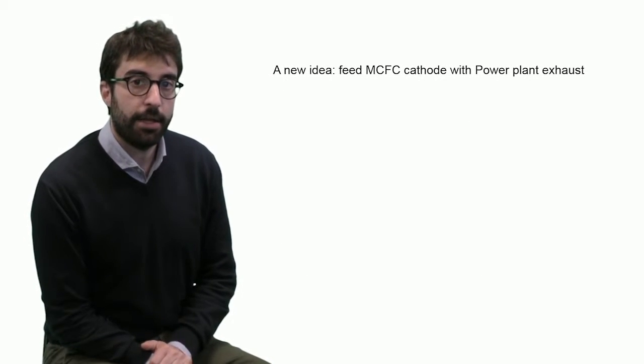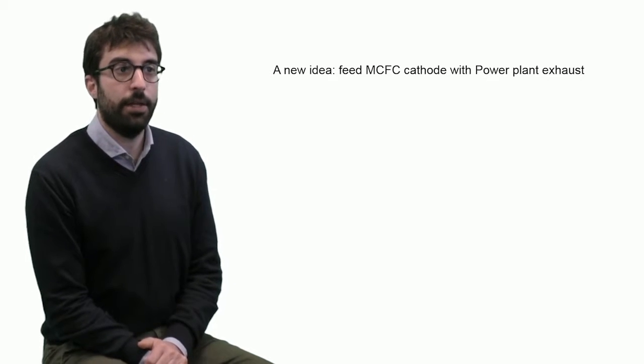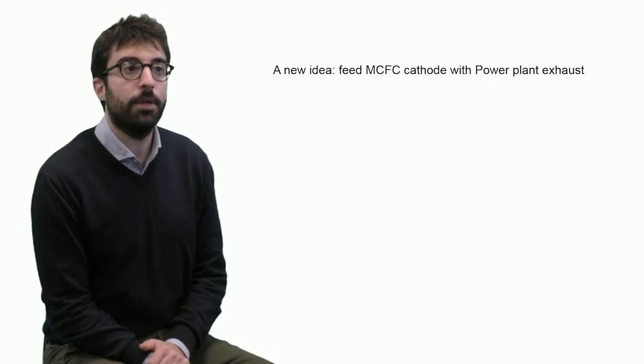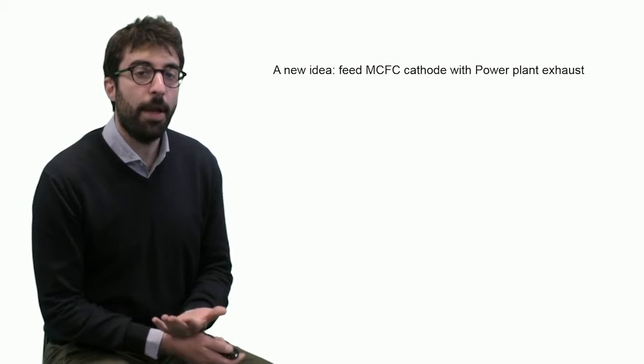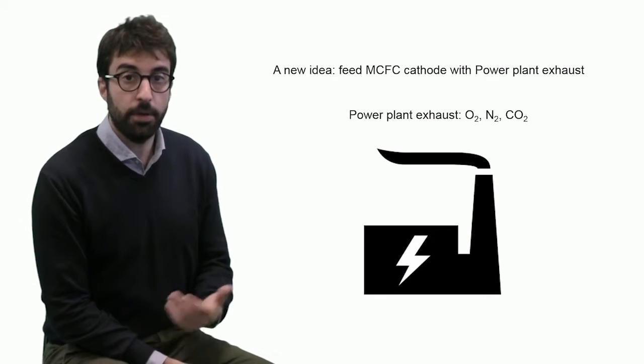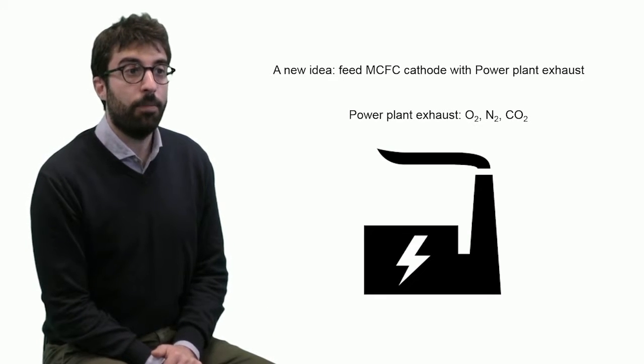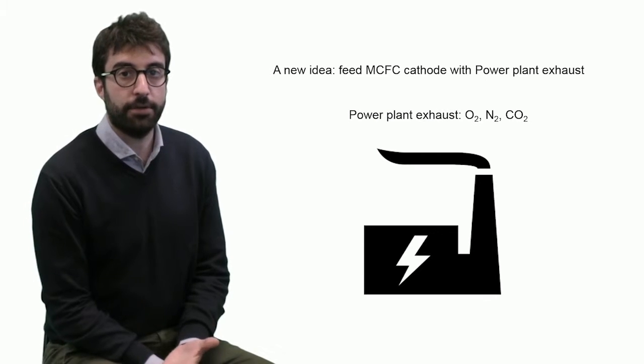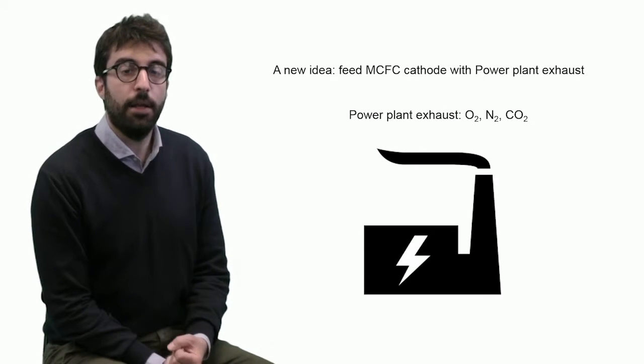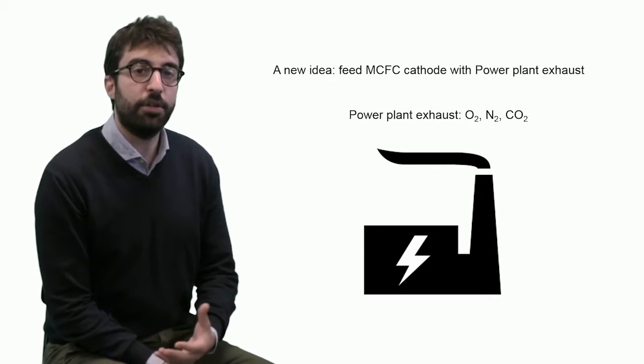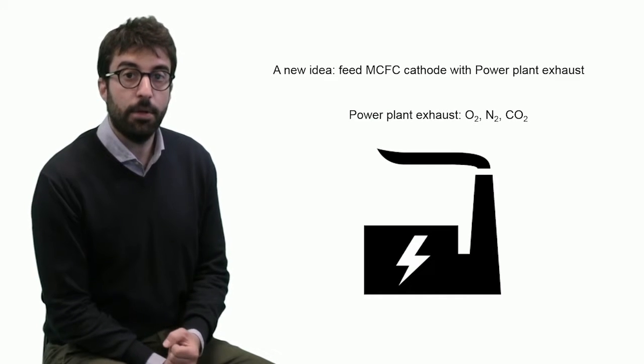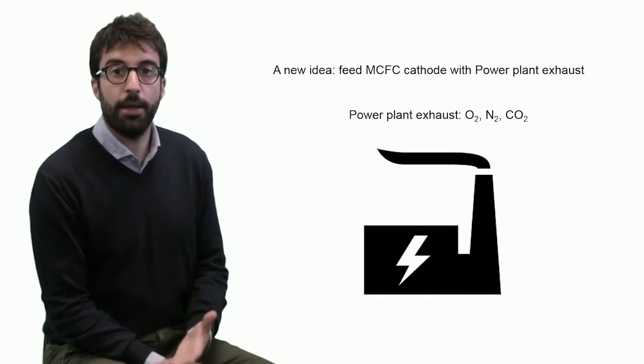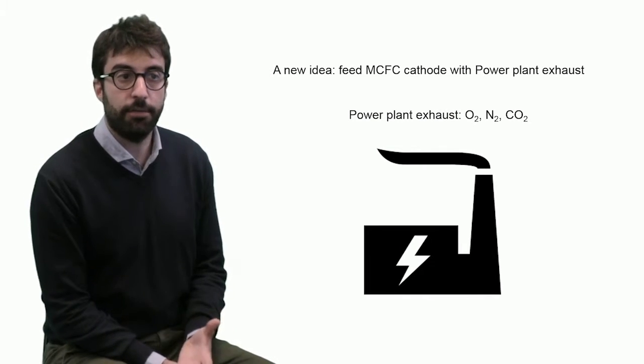What's interesting about molten carbonate fuel cell systems is a new idea that was recently developed: the idea of using the cathode of a molten carbonate fuel cell with the exhaust of a power plant. Why? Because we usually have a huge problem that a power plant exhaust is a mixture of oxygen, nitrogen, and carbon dioxide. If we want to separate carbon dioxide, it's very difficult to separate, especially from nitrogen. What we usually need is a very complex and energetic system or technology that requires a big amount of energy to separate carbon dioxide from nitrogen.